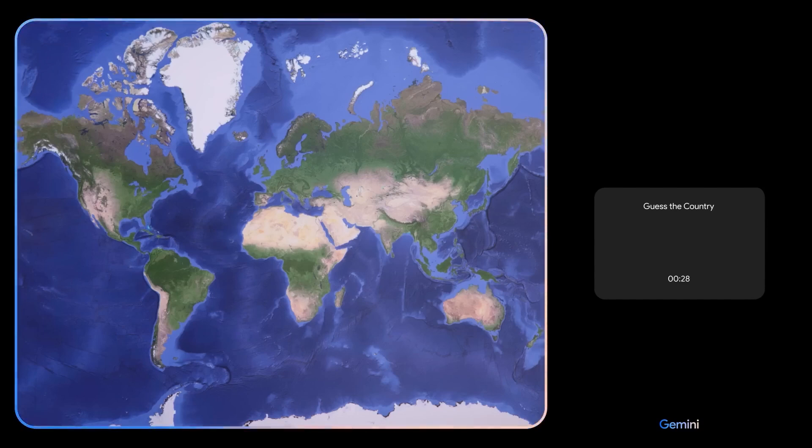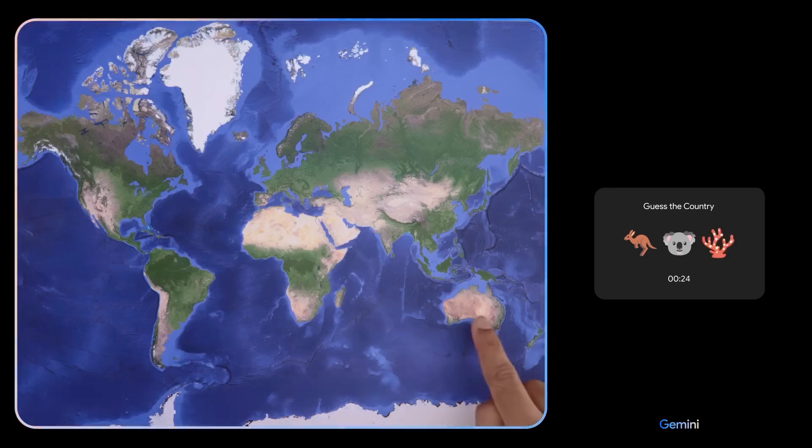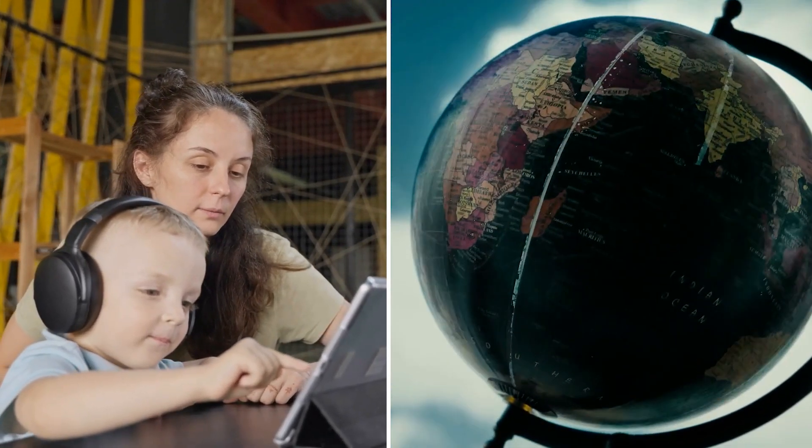Clue 1. This country is the home of the kangaroo, the koala, and the Great Barrier Reef. Oh, that's easy. This could be used in educational apps, making geography fun and interactive.